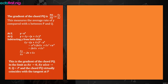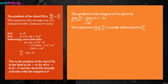This is the gradient of the chord PQ. In the limit as delta x tends to 0, delta y also tends to 0, so Q tends to P and the chord PQ virtually coincides with the tangent at P. As those movements reduce to 0, the red line moves straight and becomes the same as the tangent line. The gradient of the tangent at P is found by limiting delta x to 0: delta y over delta x equals 2x plus delta x, which equals 2x.